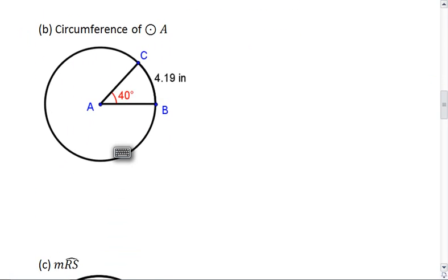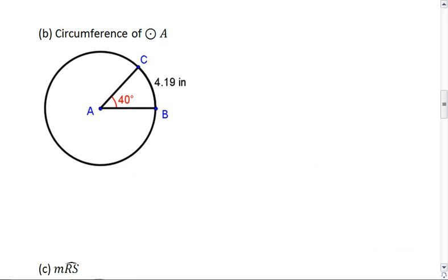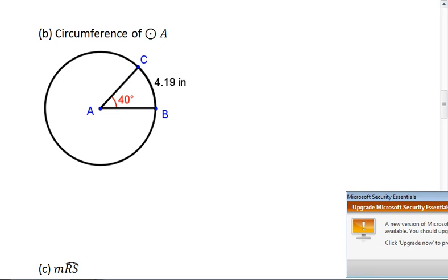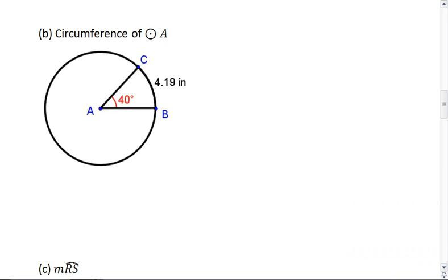You'll then go on to this one. We are looking for the circumference of circle A, where the angle CAB is 40 degrees and the arc length CB is 4.19 inches.